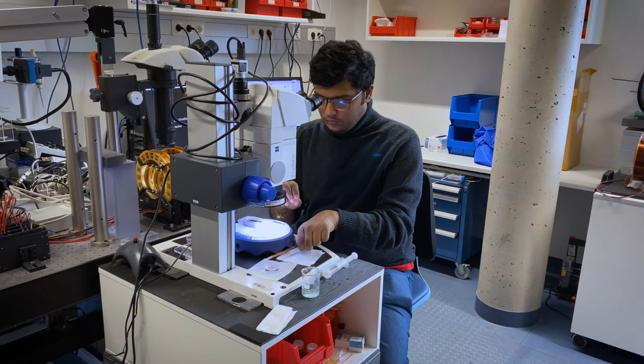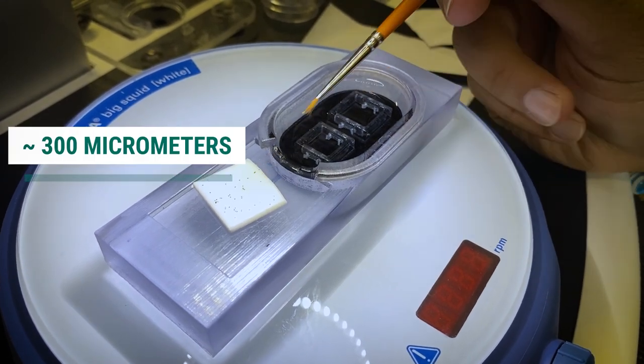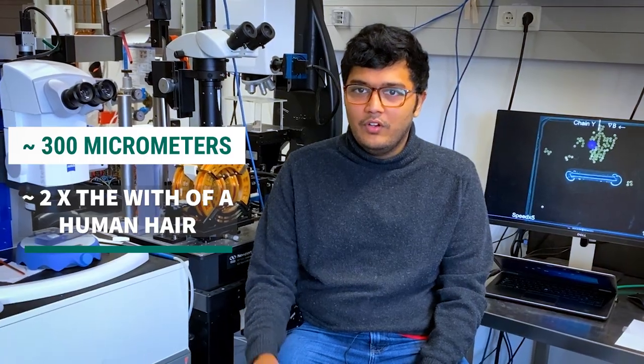These discs or tiny robots are made of polymer with 3D printing, and they are roughly 300 micrometers, so roughly two times the width of a human hair.